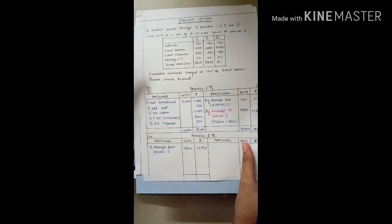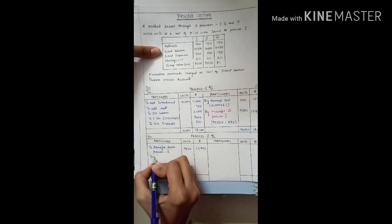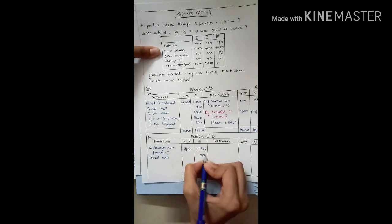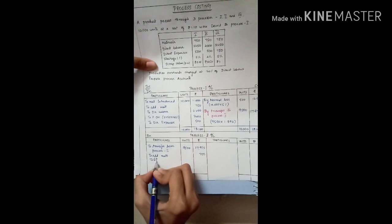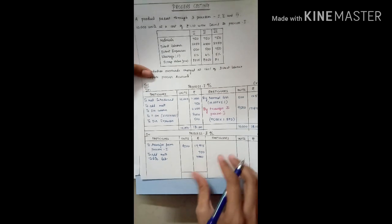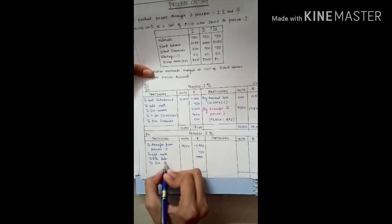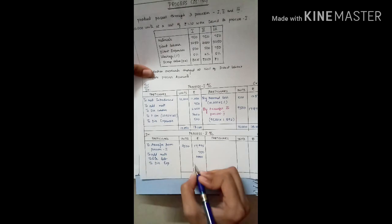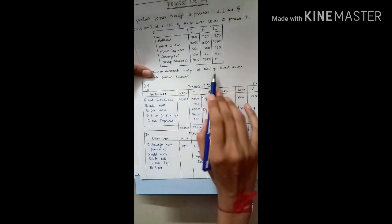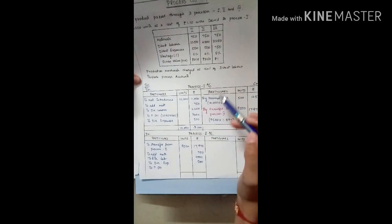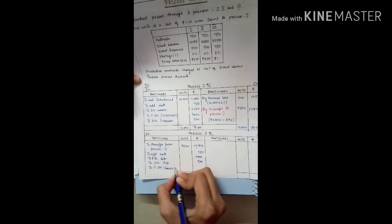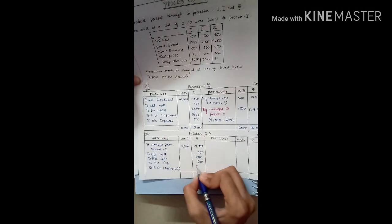Now we debit all expenses for process two: additional material is 750 rupees, direct labor is 4,000 rupees, direct expenses are 6,400 rupees. Production overheads are charged at 160% of direct labor — 160% of 4,000 comes to 6,400.